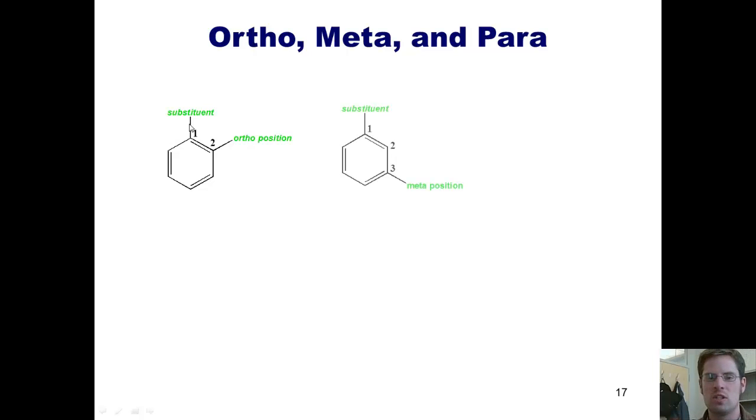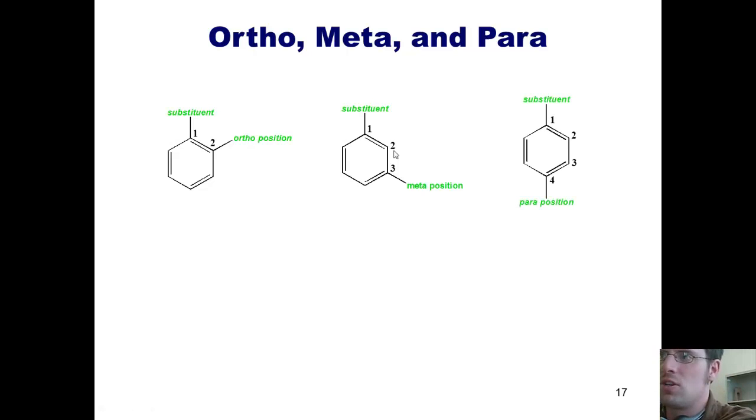In contrast, if you have two substituents that are in a 1-3 relationship, then they are meta to each other. And lastly, if they are in a 1-4 relationship, then they are para to each other.